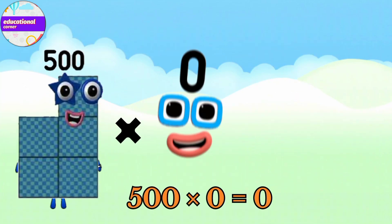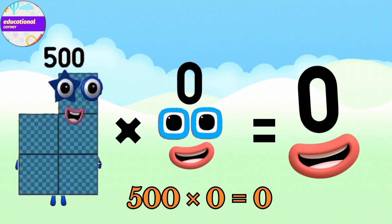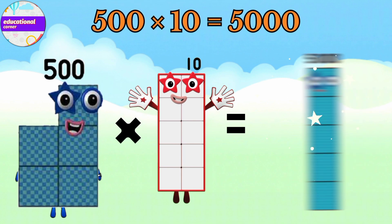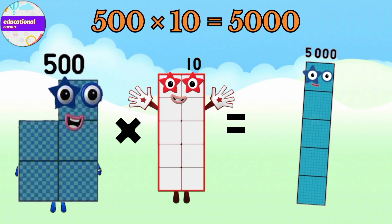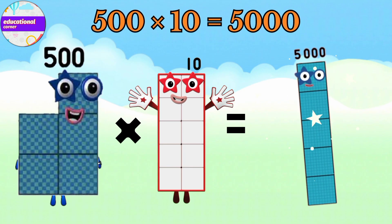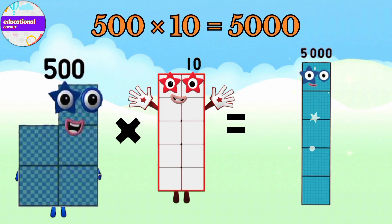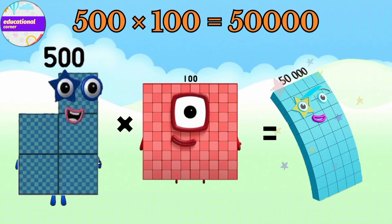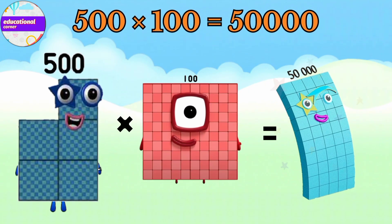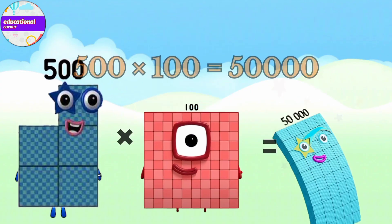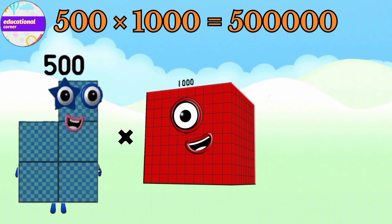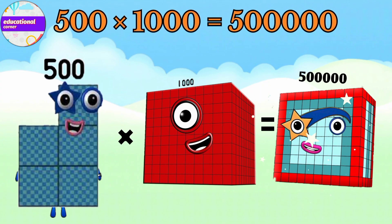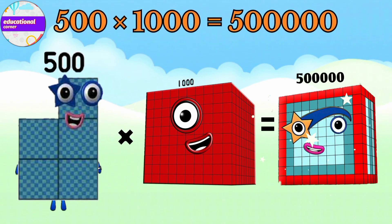400 x 1000 equals 400,000. 500 x 100 equals 500,000. 500 x 1000 equals 500,000.